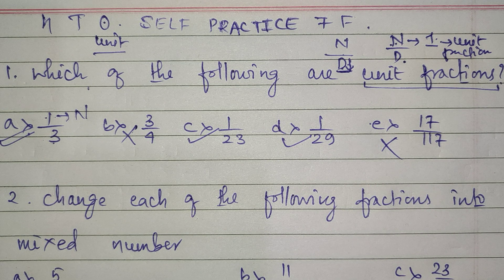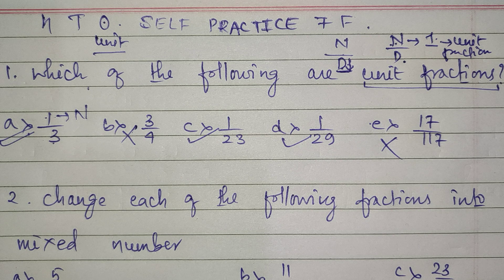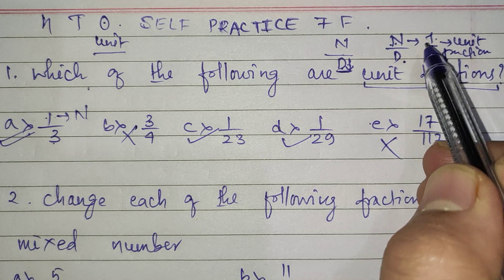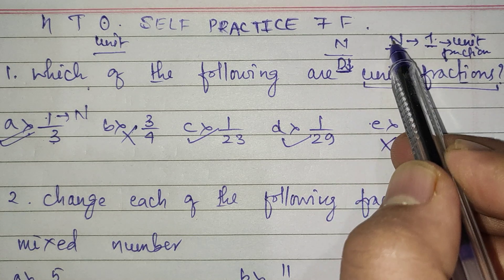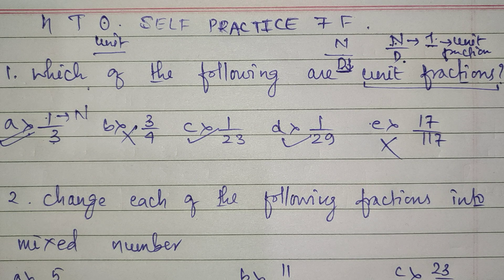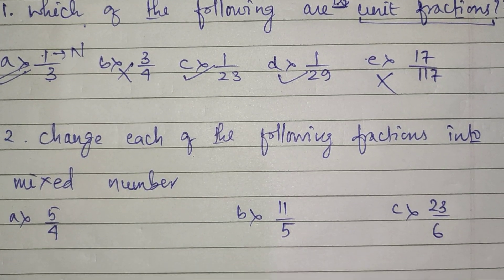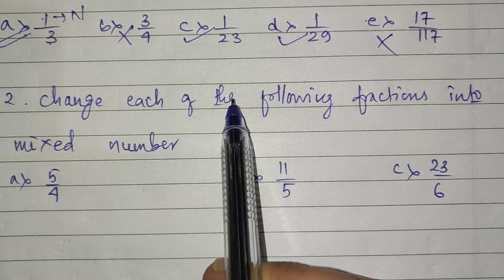I'm repeating — this is a very new term to you and you have to remember it. A unit fraction has 1 in the numerator position. For example: 1 by 5, 1 by 20, 1 by 87, 1 by 9, 1 by 3, 1 by 23, 1 by 29, etc. So proceeding to question number 2: change each of the following fractions into a mixed number.